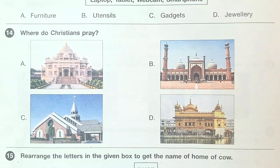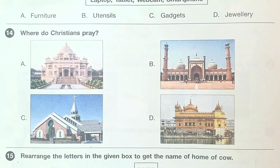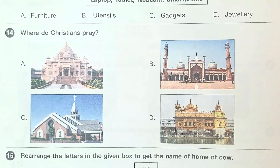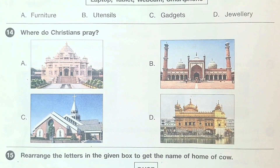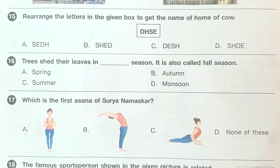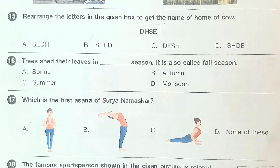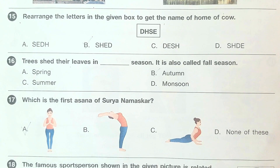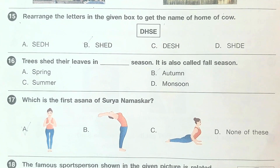Question number 14: which is the place of worship for Christians? The answer is option C, Church. Question number 15: rearrange the letters in the given box to get the name of the home of a cow. The answer is option B, Shed. Sixteenth question: trees shed their leaves in the dash season — it is also called fall season. The answer is option B, Autumn.